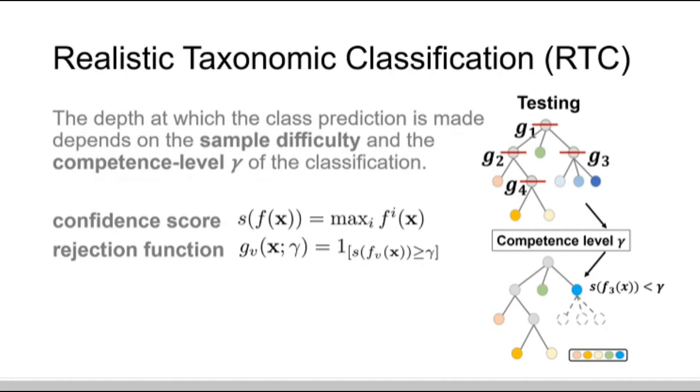In RTC, the depth at which the class prediction is made depends on the sample difficulty and the competence level gamma of the classification. A competence score is defined for the classifier, which is declared competent at the gamma level for classification if this score is beyond the level. For example, we call an RTC has competence level gamma if all its intermediate node decisions have this competence level.